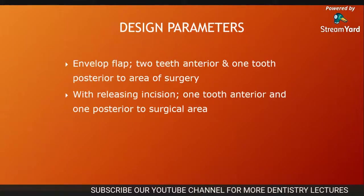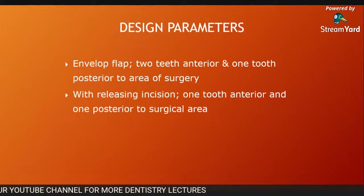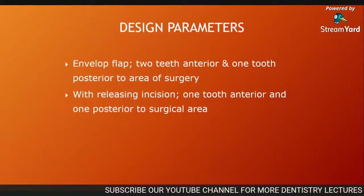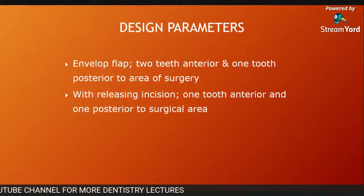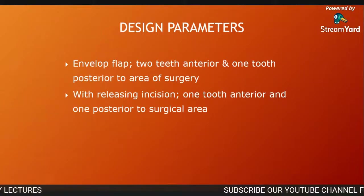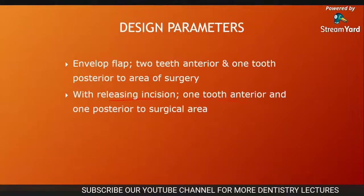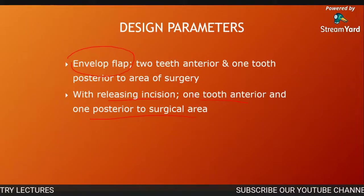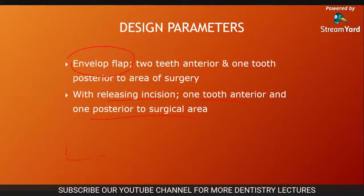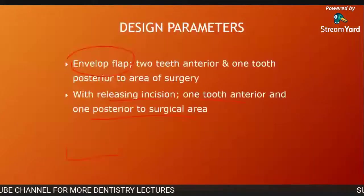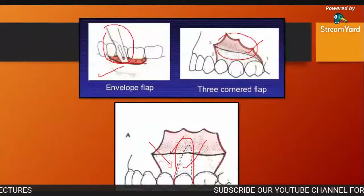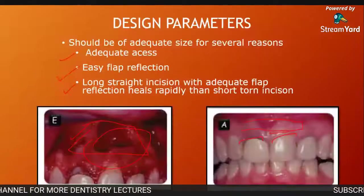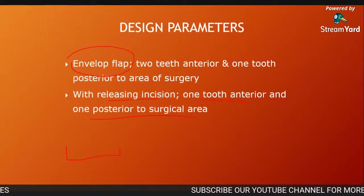For the envelope flap, it is given between two teeth anterior and one tooth posterior to the area of surgery. Whenever you are giving the envelope flap, keep in mind it should involve two teeth anterior and one tooth posterior — for example, lateral incisor, canine, and first premolar. It should be given with a releasing incision one tooth anterior and one tooth posterior to the surgical area.